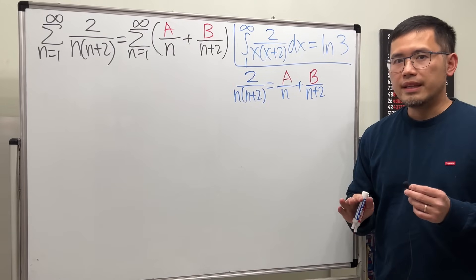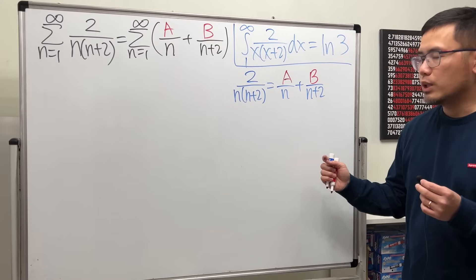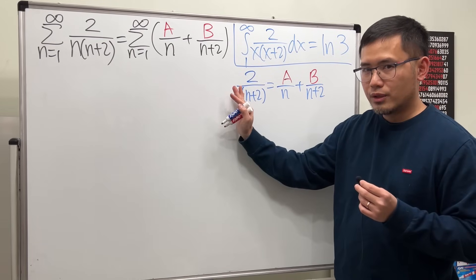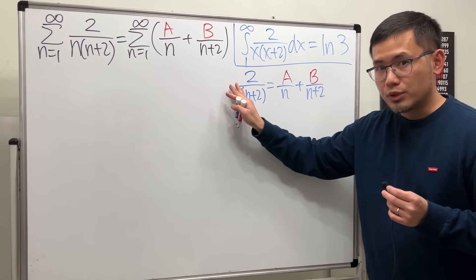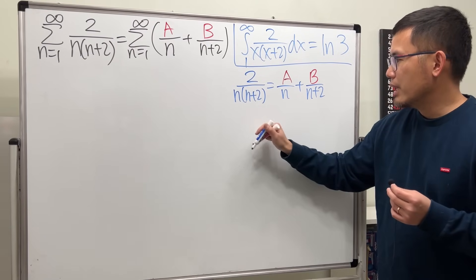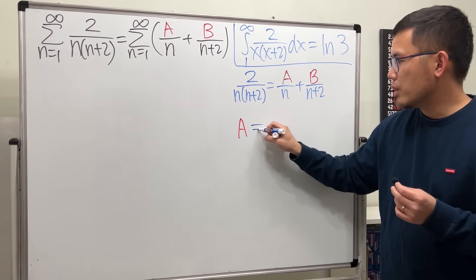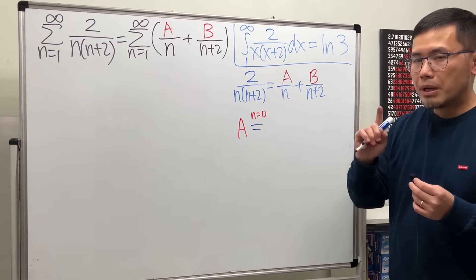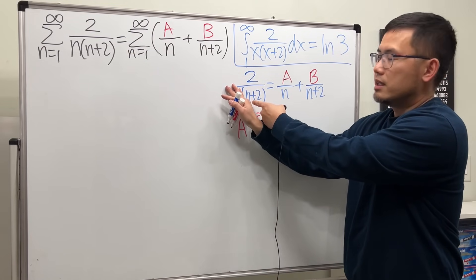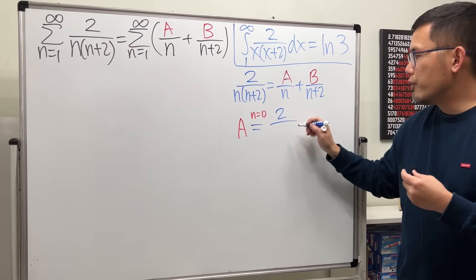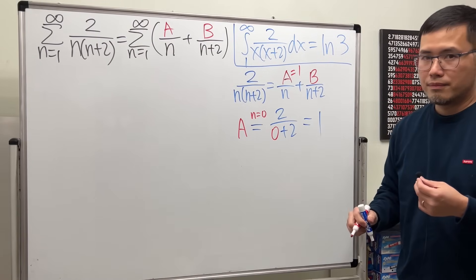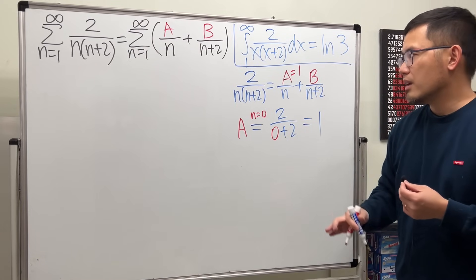I'll show you the fast way first and then explain why it works. This is called the cover-up method. For A over n, we cover up the denominator n from the original, then ask: how can we make n equal to 0? Set n equal to 0. We put n=0 into the remaining expression: we get 2 over 0 plus 2, which equals 1. So A equals 1.